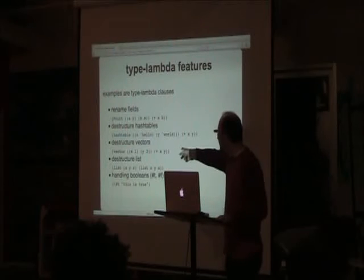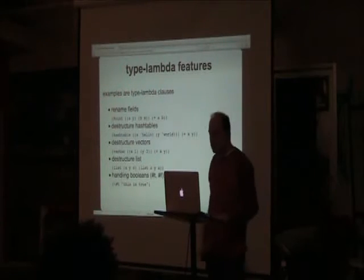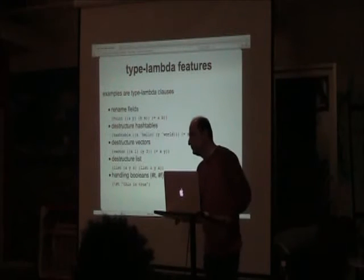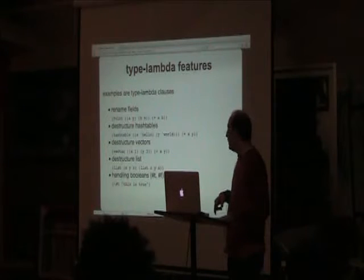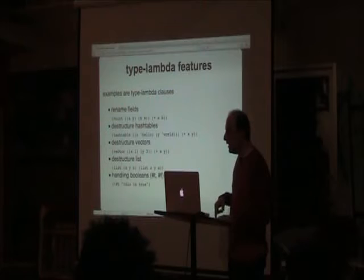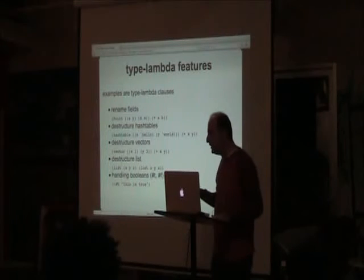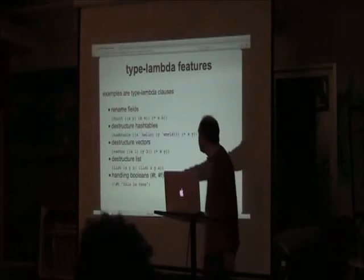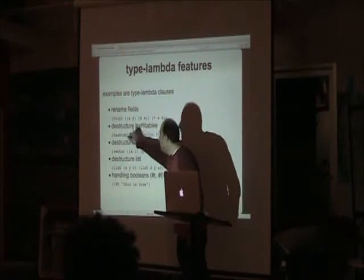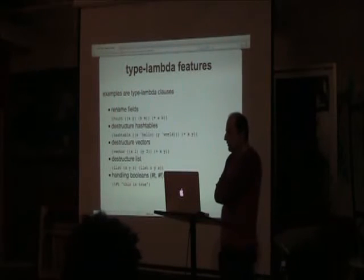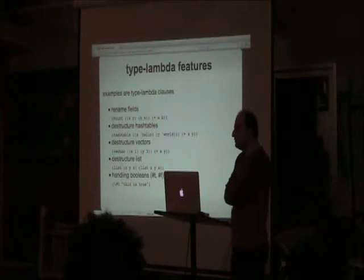For vectors it would be like a vector-ref of the first value, third value, etc., assigning them to variables. For hash tables you have to know the keys in advance. It treats a hash table more like a record in this case.